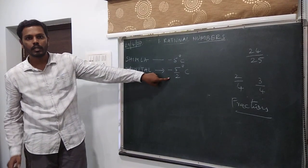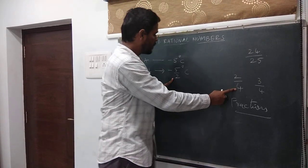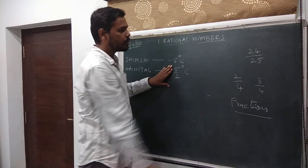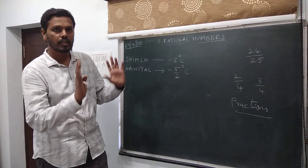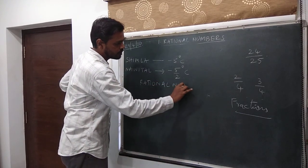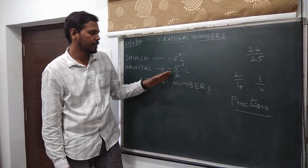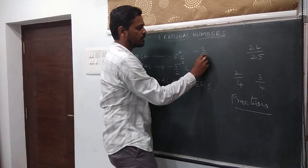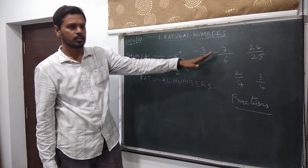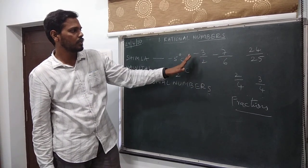Now minus 5 by 2 is a number that cannot be dealt with easily. It is not a natural number, not a whole number, not an integer, but it has a close relation with a fraction. If you disregard the negative sign, this number is the same as a fraction. So if we put fractions and these fraction-like numbers — both collections into a single collection — we call them rational numbers. These are the same as fractions except they also include a negative sign.